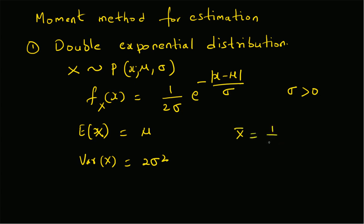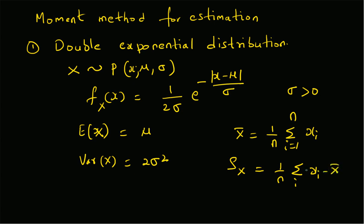From the data, given n data points, the sample mean is defined as (1/n) * summation from i=1 to n of x_i. Similarly, the sample variance is given by (1/n) * summation from i=1 to n of (x_i - x_bar) squared.